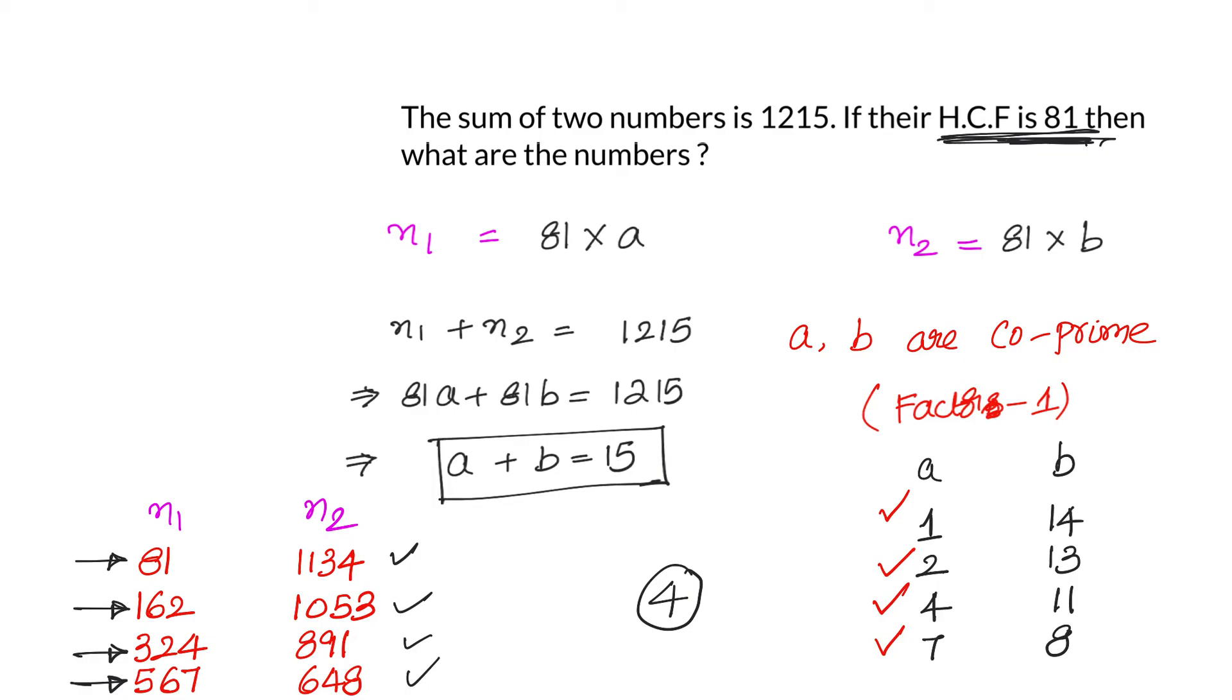So let's have a recap of this problem. We have been given that the sum of 2 numbers is 1215. If their HCF is 81, then what are the 2 numbers? Now since we have been given that the HCF is 81, we write down the numbers as n1 = 81 into a and n2 = 81 into b, where a and b are natural numbers. Now n1 plus n2 is 1215, so we write down 81a plus 81b is 1215, or a plus b equals to 15.